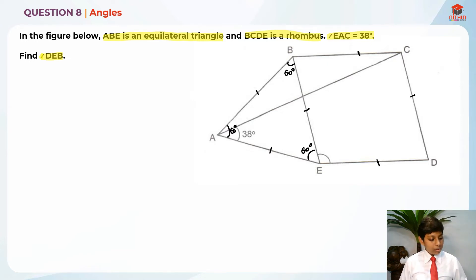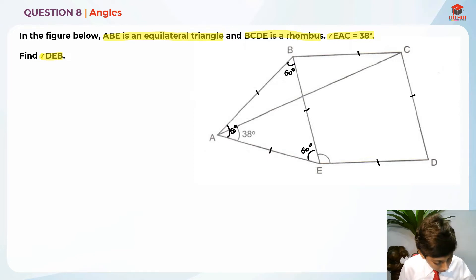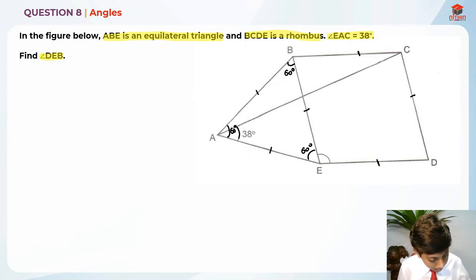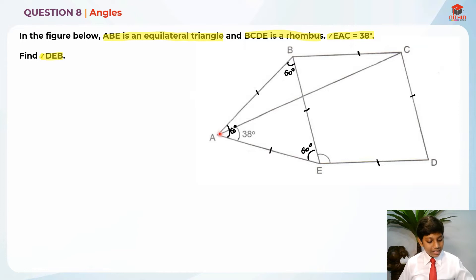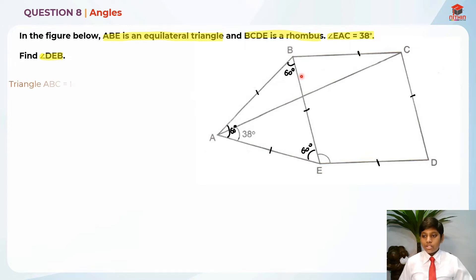They're telling us that angle EAC is equal to 38 degrees — this angle over here. Now, when I label the equal lines, do you see triangle ABC? Both of these lines are equal, so what does that mean? It is an isosceles triangle.